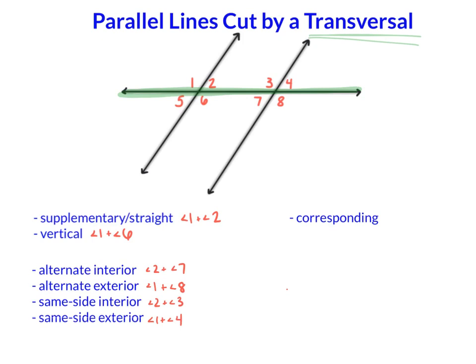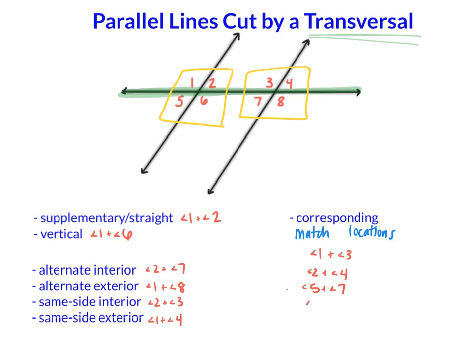The newest type we learned was corresponding angles. Corresponding angles come from each group — I have two groups of four angles in parallel lines cut by a transversal, and corresponding angles match up locations in one of each group. Angle 1 is in the top-left of its group, and angle 3 is also top-left — so those correspond. Similarly: 2 and 4, 5 and 7, 6 and 8. Today's goal is to figure out the relationship between angle measures for each of these pair types — are they equal or different?